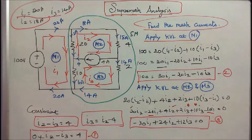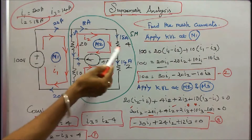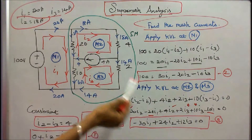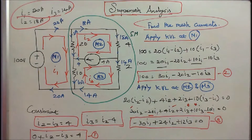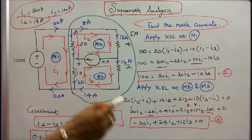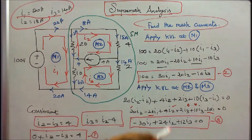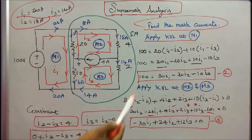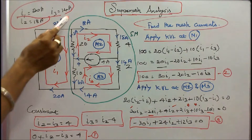Now I apply Kirchhoff's voltage law at meshes 2 and 3: 20 into (I2 minus I1) plus 4 I2 plus 2 I3 plus 10 into (I3 minus I1) is equal to 0. Simplifying, I get minus 30 I1 plus 24 I2 plus 12 I3 is equal to 0. This is equation 3. With three equations and three unknowns, I solve: I1 is equal to 20 amps, I2 is equal to 18 amps, I3 is equal to 14 amps.